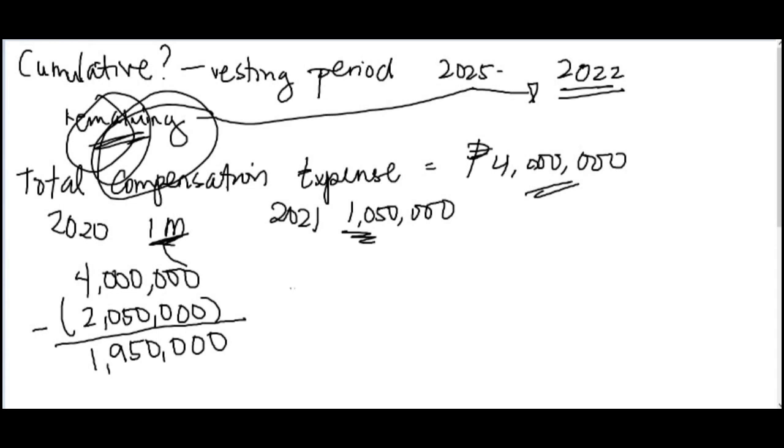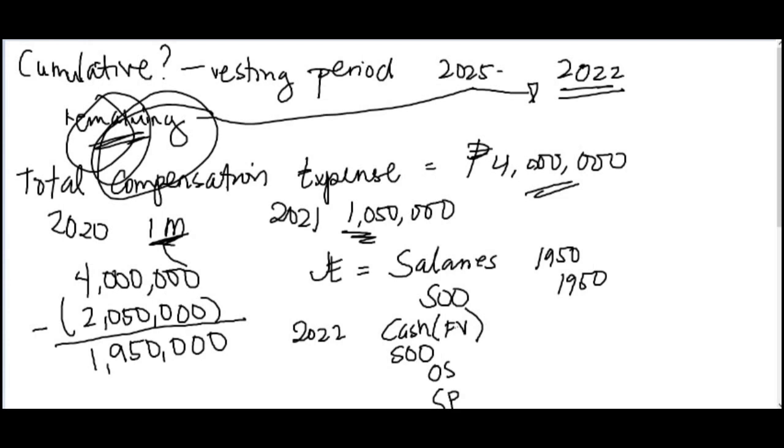So the journal entry, of course the usual, salaries expense, and then credit SOO. How much? Well, the addition, 1,950,000. And on the exercise date, that's in 2022, what do you recognize? Enter the usual entry. Cash, debit cash, SOO, credit OS and share premium. You know that cash is measured at exercise price, sorry, exercise price. So the exercise price is 60 pesos. So put 50,000 shares.